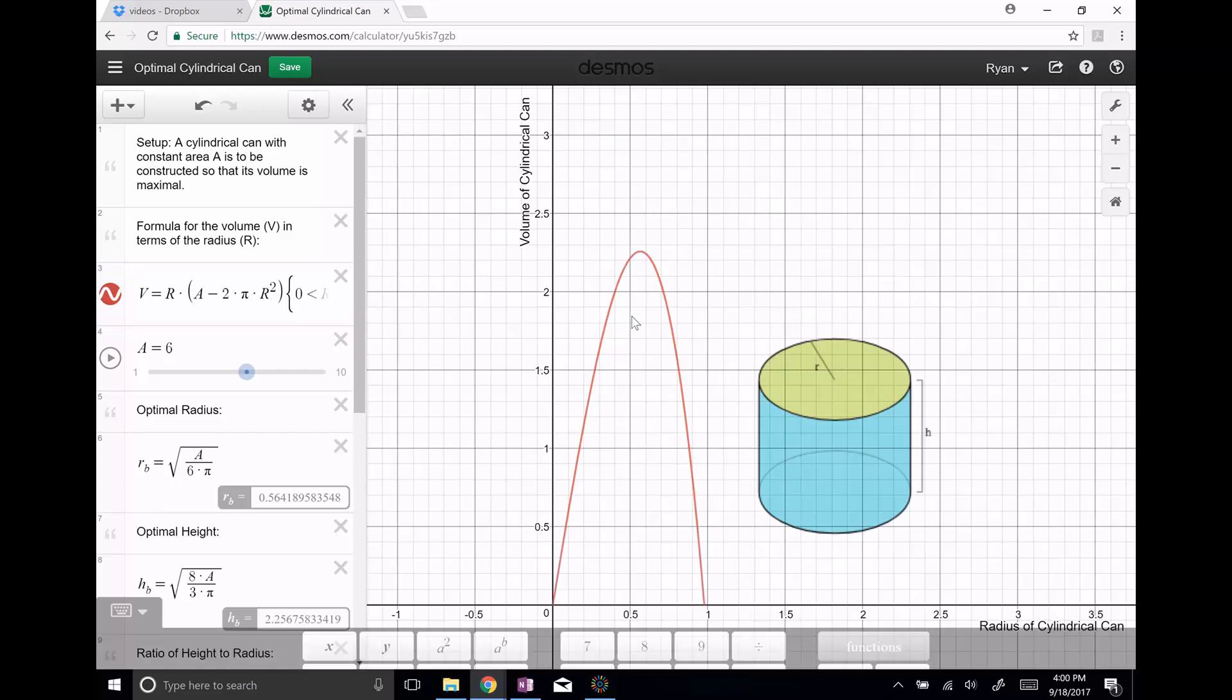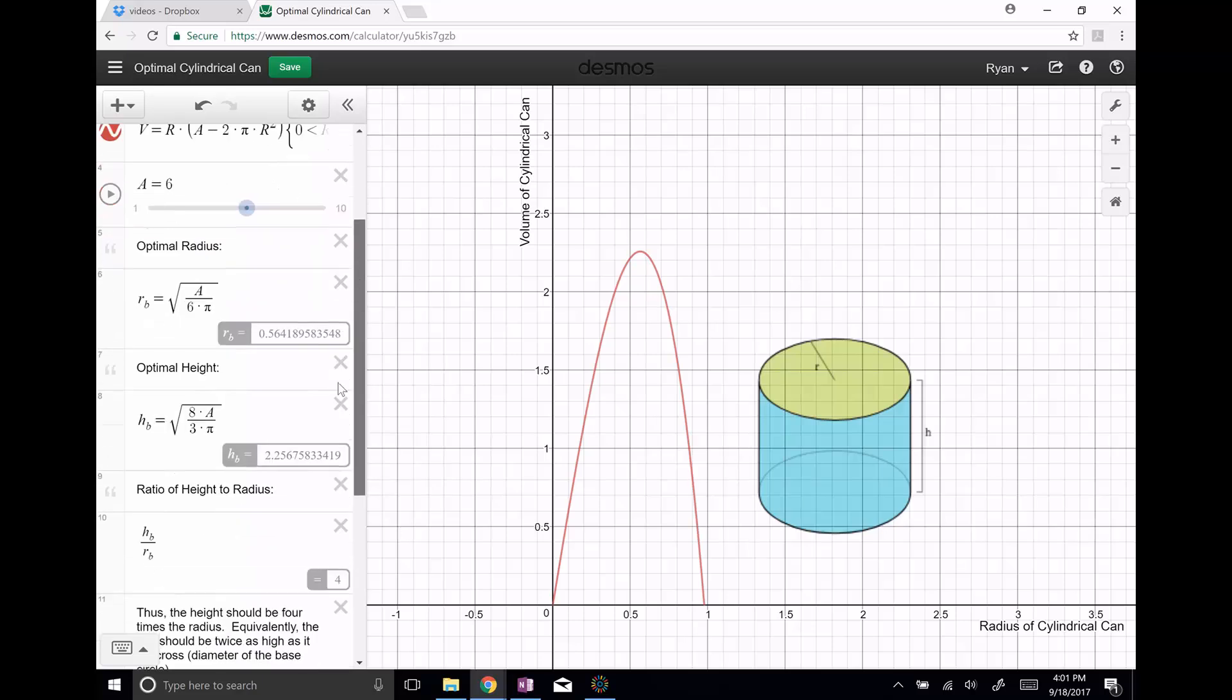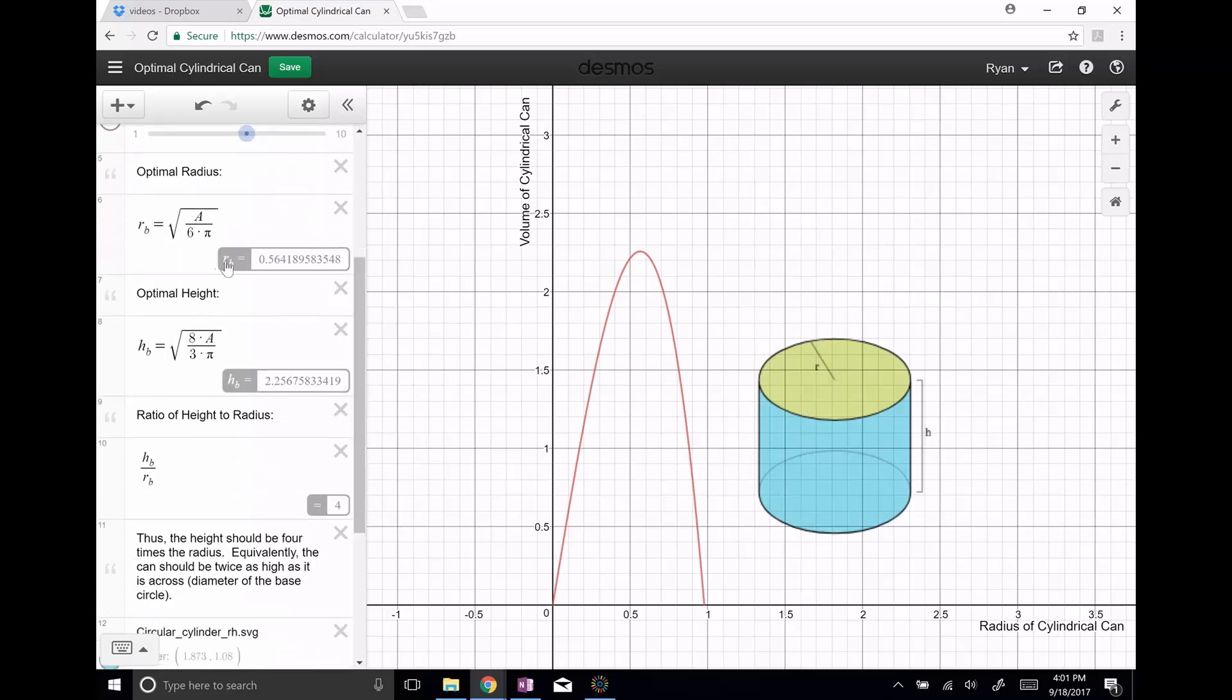And this seems to somehow maximize this volume of the cylindrical can. You might also wonder what is the best height. So we have here is the best radius, and we can solve and actually get the best height. And okay, these numbers are pretty unimpressive, but if you look at the ratios between the height and that best radius, you see that in this case it happens to be four.